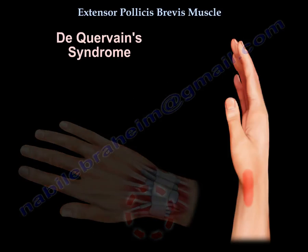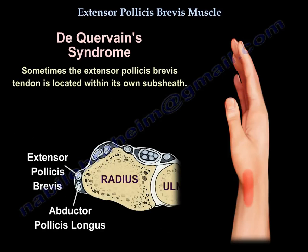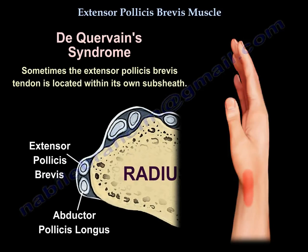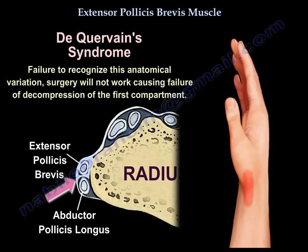Sometimes the extensor pollicis brevis has its own sub-sheath, so it is hiding in its own space. If the surgeon fails to recognize this anatomical variation, the surgery may not work and will result in failure of decompression of the first compartment of the wrist, with recurrence of symptoms.